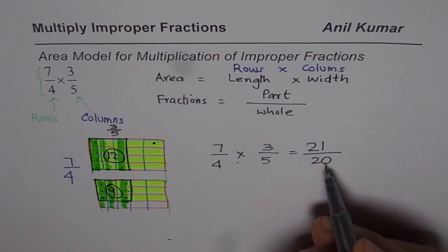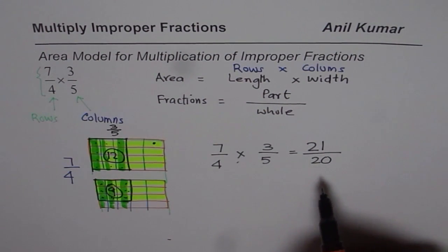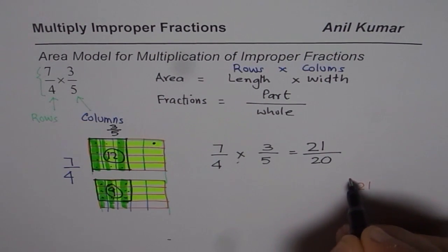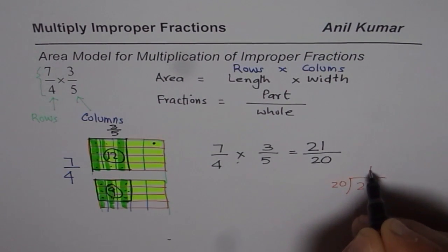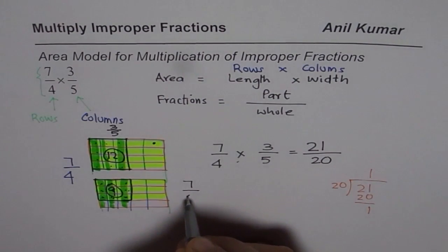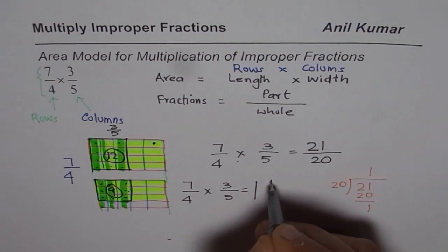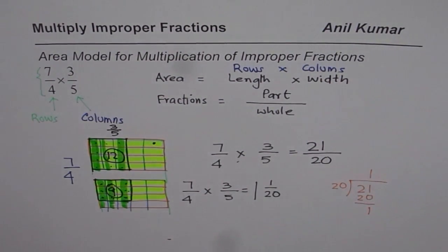Now, at times we need to write it in the lowest terms or in mixed numbers. So to write this in mixed numbers, you can divide 21 by 20. So it goes 1 times and the remainder is also 1. And you could write this as 7 over 4 times 3 over 5 is equal to 1 whole 1 over 20. So that is how you can find product of 2 fractions using area model.